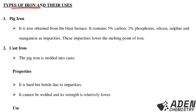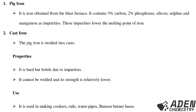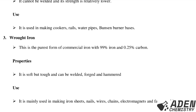Types of iron and their uses. First, pig iron: obtained from the blast furnace, it contains 5% carbon, 2% phosphorus, silicon, sulfur, and manganese as impurities. These impurities lower the melting point of iron. Second, cast iron: pig iron is molded into casts. It is hard but very brittle due to the impurities, cannot be welded, and has relatively lower strength. It is used in making cookers, rails, water pipes, Bunsen burner pieces, and stools.